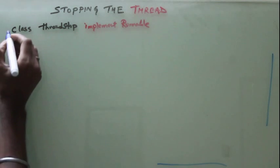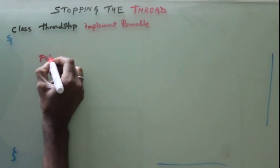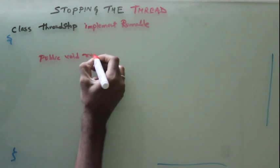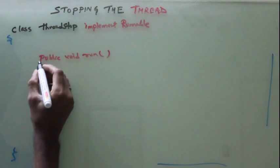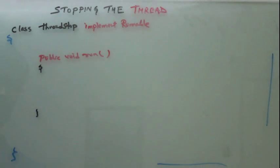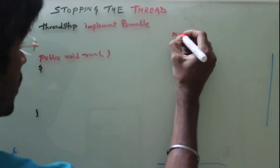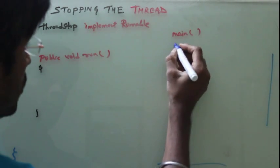So once it implements Runnable interface, it has to have one method, run. I will say public void run. And I have one main method inside Java.